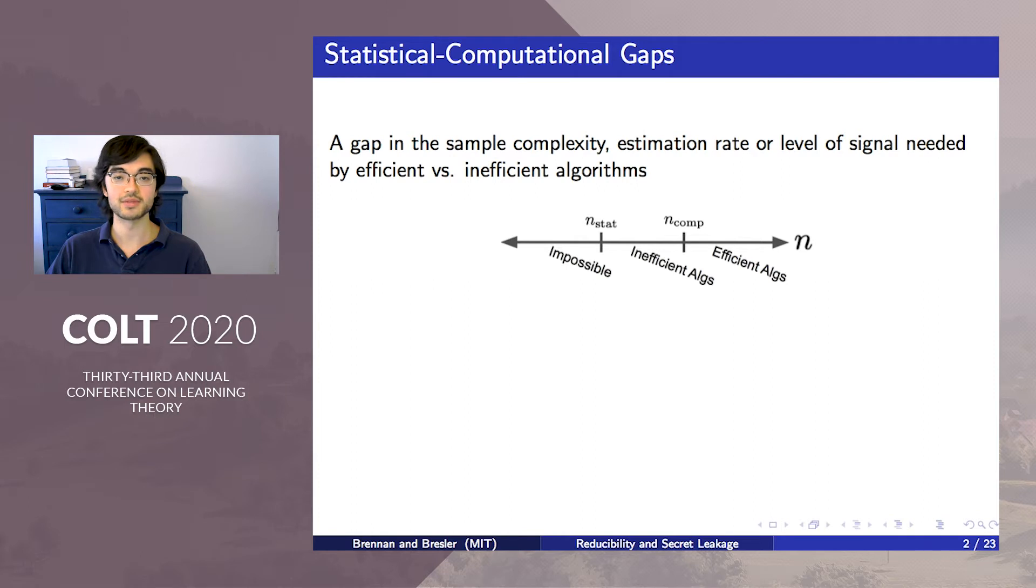These gaps yield three parameter regimes. If the number of samples is below a certain level n-stat, then the problem is information theoretically impossible. If the number is above n-stat but below another level n-comp, then the problem can be solved but only inefficiently. And if the number is above n-comp, then efficient algorithms begin to kick in.